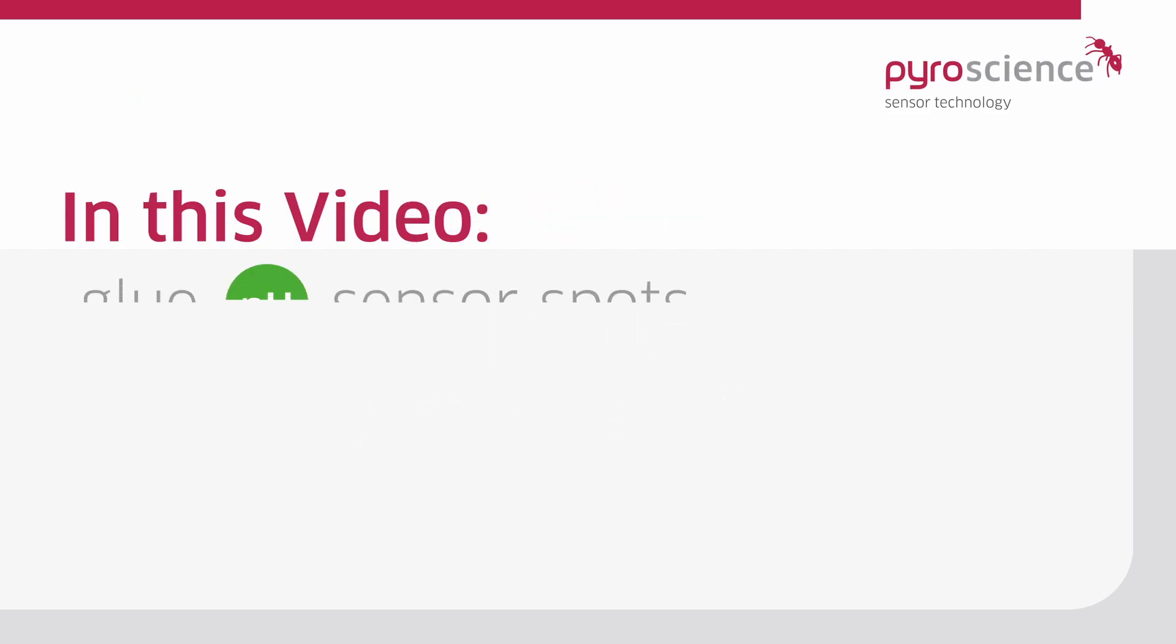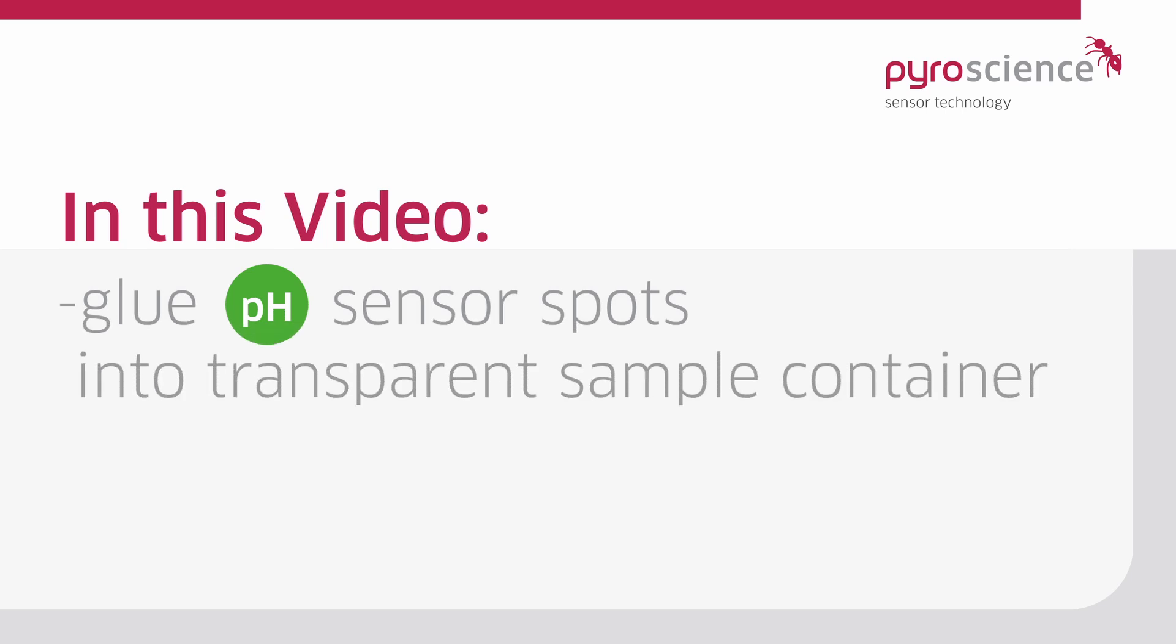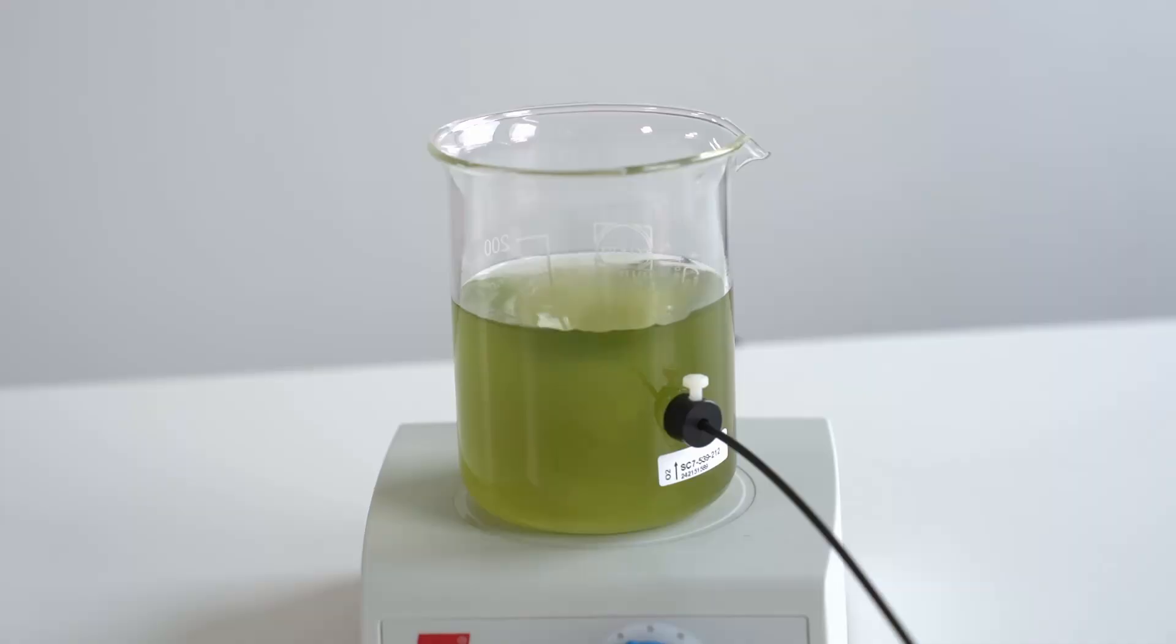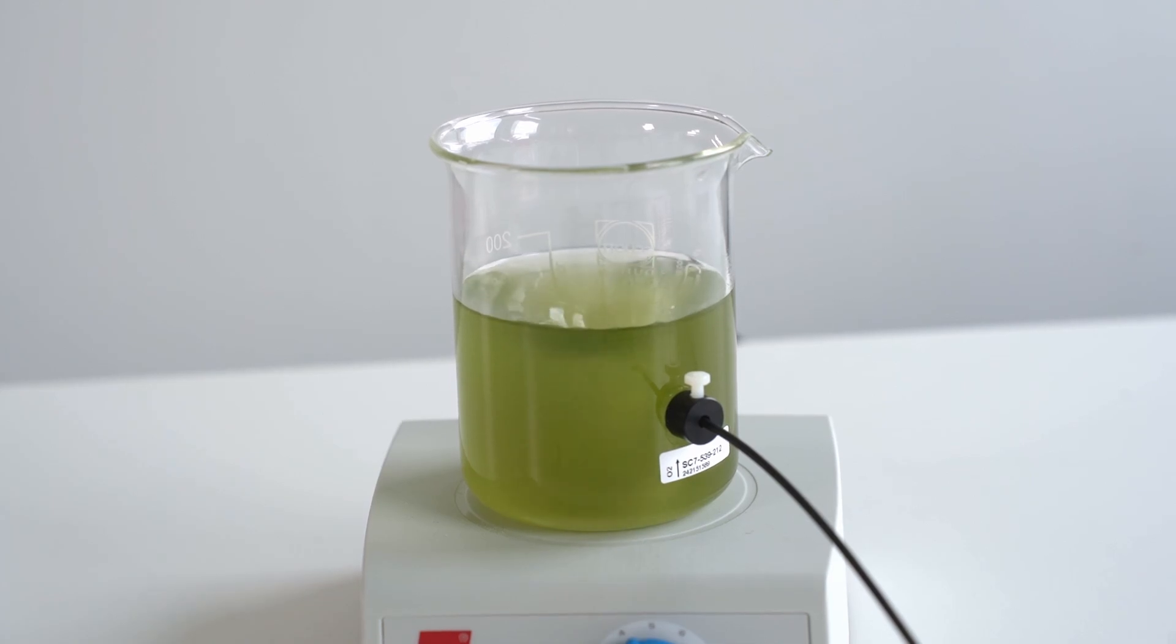In this video guide we are going to show you how to properly glue pH sensor spots into transparent sample containers using silicone glue. Follow these steps for an ideally fixed sensor spot in your setup ready for your measurements.